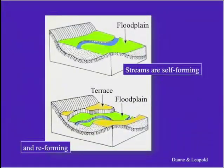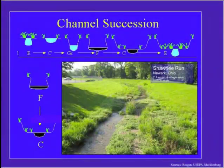Self-forming streams are pretty much what every stream is. No one built all the streams out there on this planet — the streams form, they reform, different things happen and they reform back to some condition, some state that the watershed wants them to be in, in response to the watershed conditions, the geology, the sediment supply, the energy.